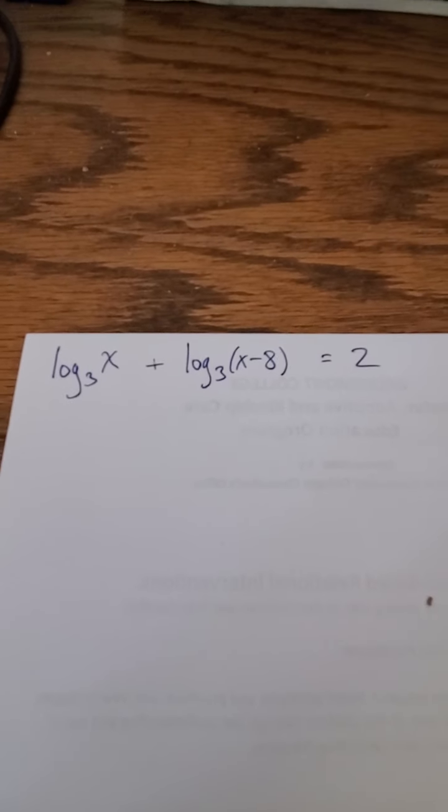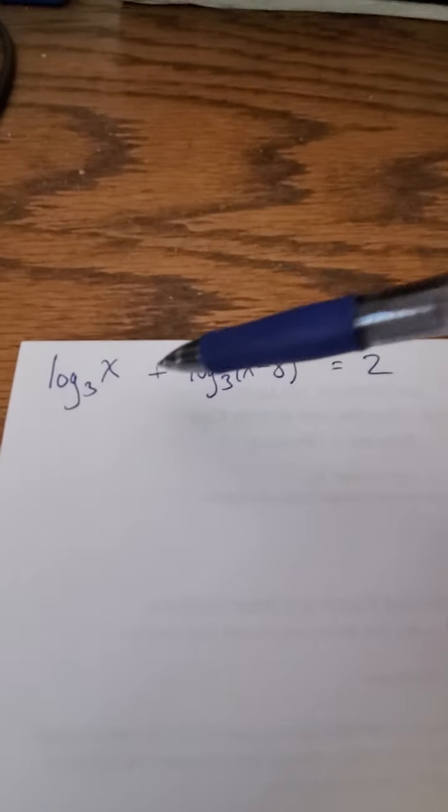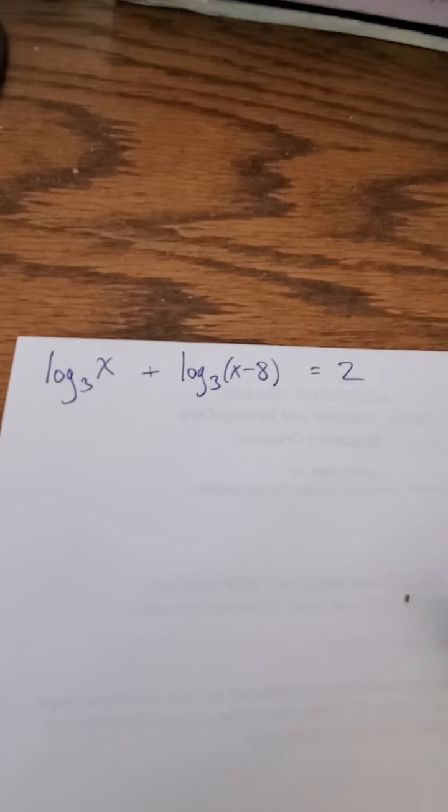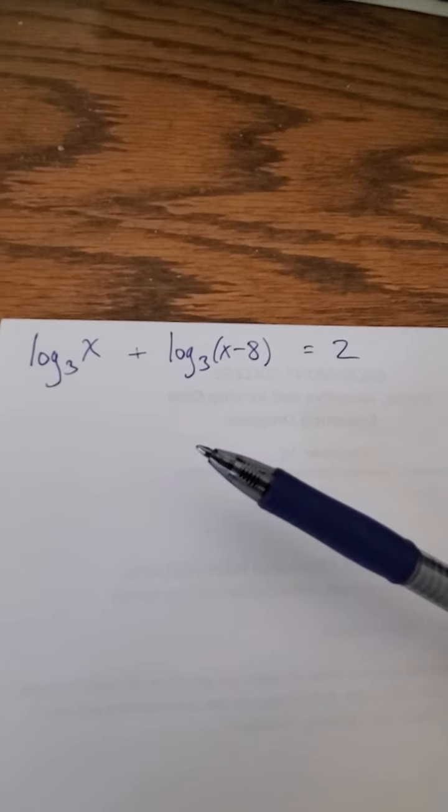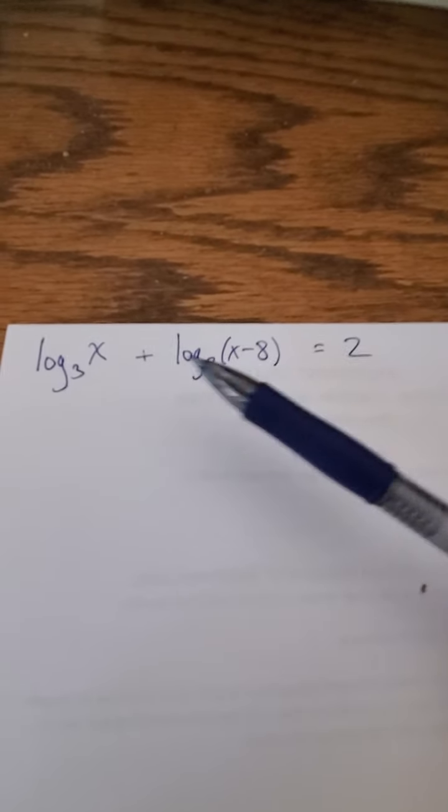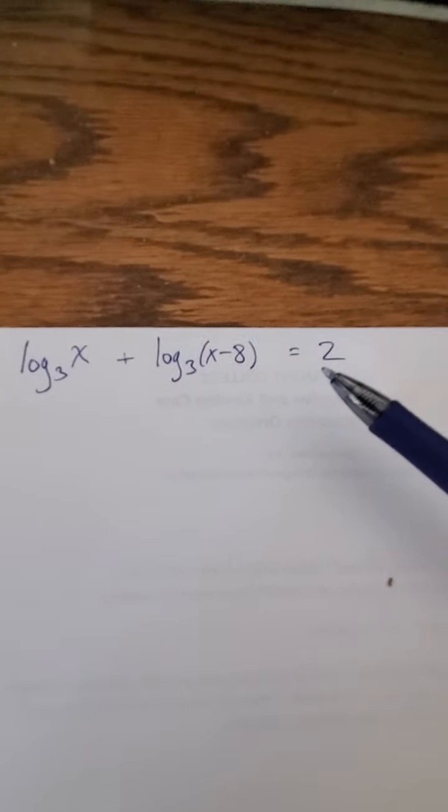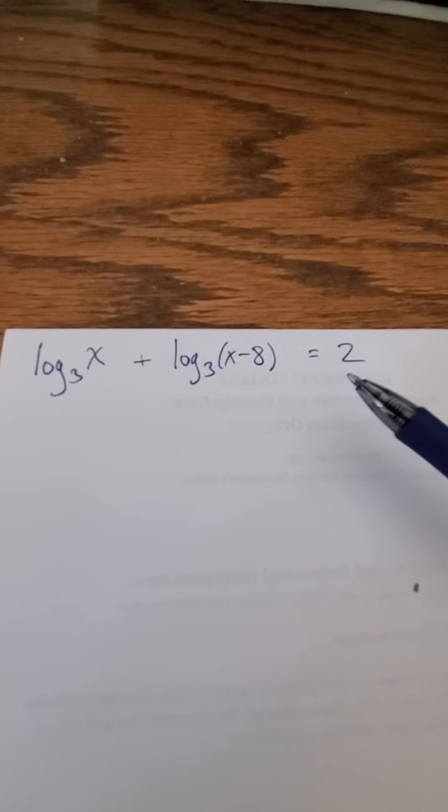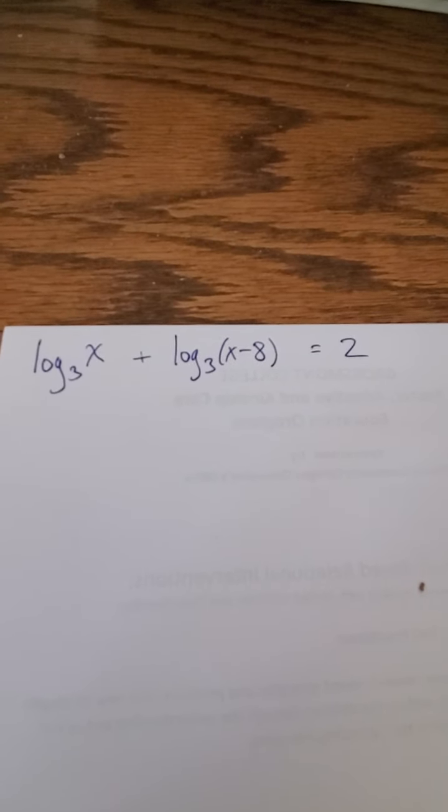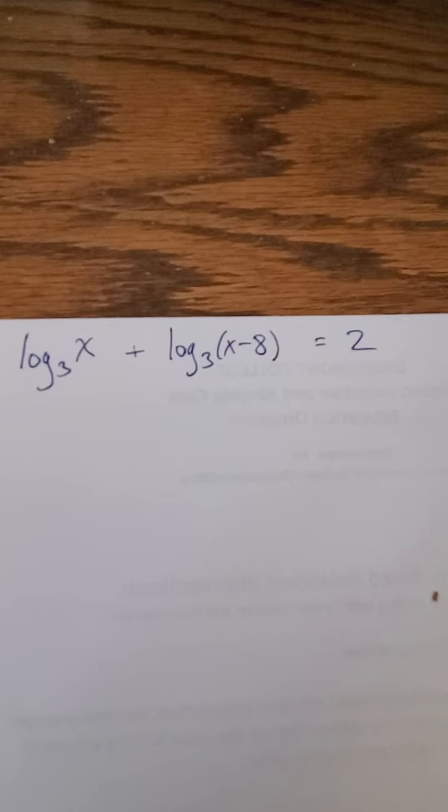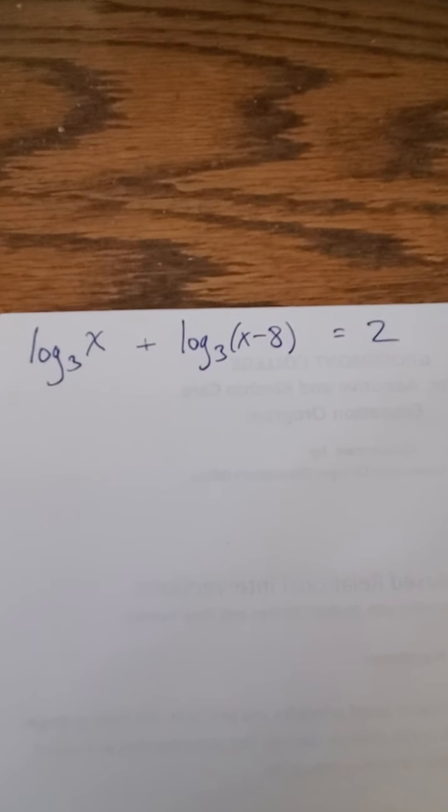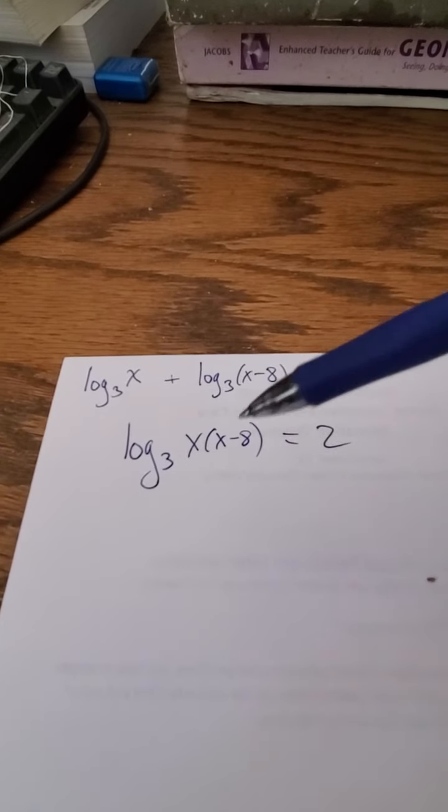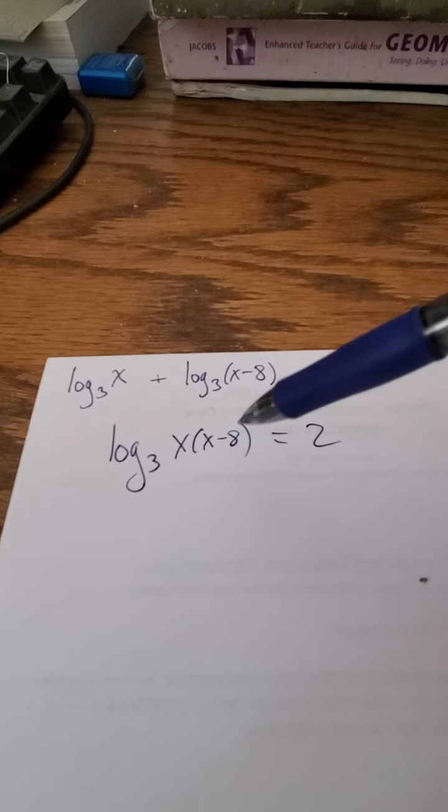Here's a problem where the actual base does matter. In this problem it's in base 3, and the base will matter. How can you tell? How do you know? Because I have log, log, and here I have a plain 2. You see, if I had logs all around, all I care is, well, let's see why it matters. So first we're going to use our log properties to combine, to condense these logs. So I have the log base 3 of x times x minus 8 equals 2.